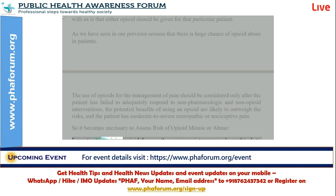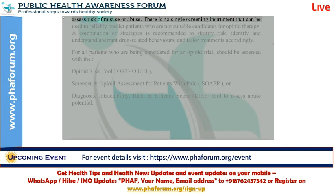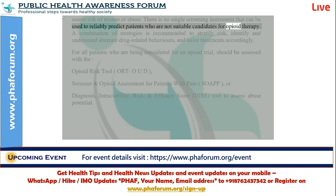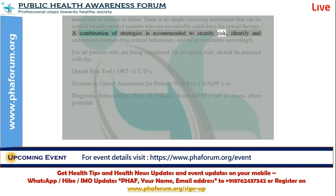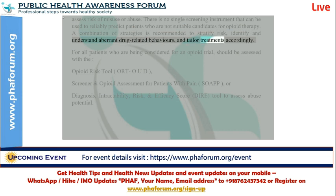So it becomes necessary to assess the risk of opioid misuse or abuse. For patients receiving opioid therapy, there are a variety of commonly used tools to assess risk of misuse or abuse. There is no single screening instrument that can reliably predict patients who are not suitable candidates for opioid therapy. A combination of strategies is recommended to stratify risk, identify aberrant drug-related behaviors, and tailor treatments accordingly.